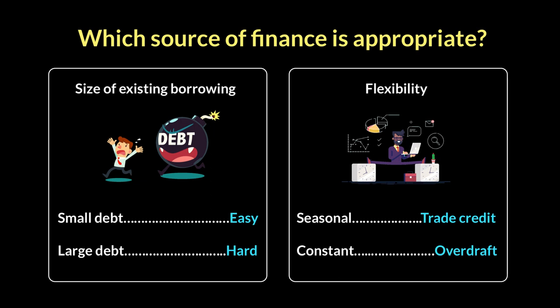So, six factors that we looked at: flexibility, size of existing borrowing, amount needed, the time that it's needed for, the legal structure, and the financial cost. These six factors help a business determine which source of finance is most appropriate at any given point in time. That is how business finance works.